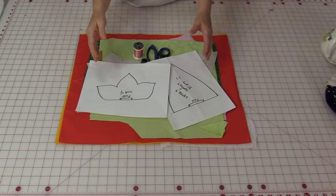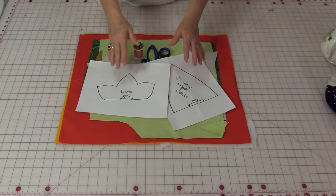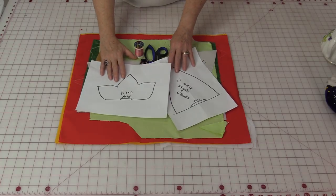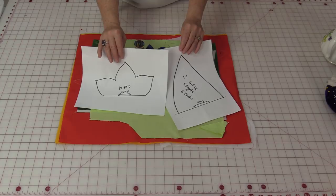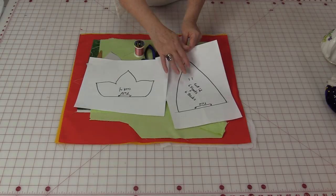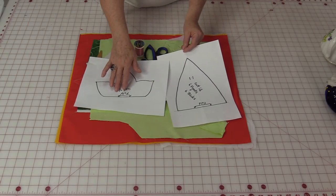I've designed this teapot cozy to look like a blooming flower, so you're going to need a couple of pattern pieces. Both of these are going to be in the description and you can download them. Download them at 100%. You're going to have petals and the leaves.